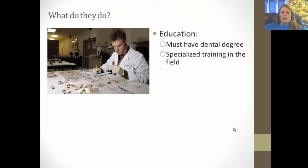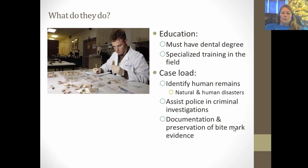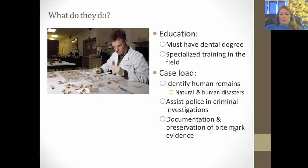So what do odontologists do? To become an odontologist you first have to have your dental degree and then specialize in a particular field in training, usually in law enforcement of some type. A caseload may include identifying human remains from a natural disaster or bombing, assisting in police and criminal investigations, and more importantly the documentation and preservation of bite mark evidence, since cases may not go to court for several years.